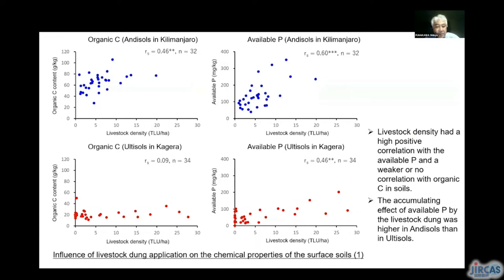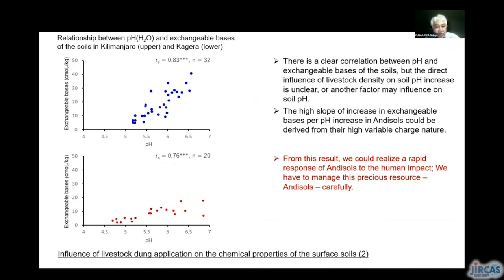The horizontal axis is the tropical livestock unit (TLU), and the relationship between TLU and organic carbon content or available phosphate was tested for both Andisols and Alfisols. In Andisols, organic carbon and available phosphate increase according to the increase of livestock dung. But in Alfisols, such response of soils was much unclear. There is a clear correlation between pH and exchangeable bases, but the direct influence of livestock density on soil pH increase is unclear. The high slope of increase in exchangeable bases per pH increase in Andisols could be derived from their high variable charge nature. We can realize a rapid and clear response of Andisols to human impact, and we have to manage this precious resource carefully.